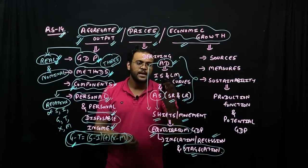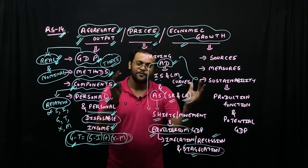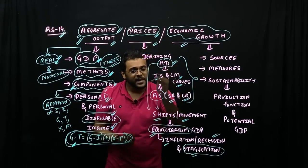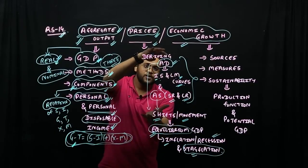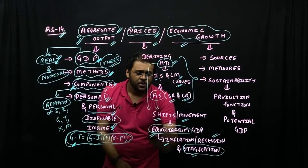then aggregate supply derive, which will be short run and long run. Then merge them. Then equilibrium GDP.